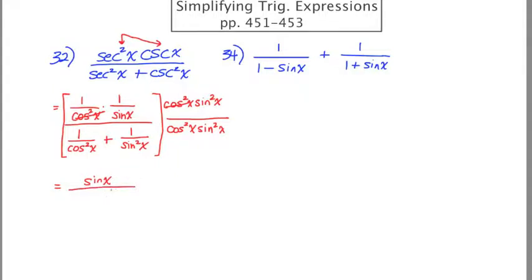On the bottom, I will distribute. Cosine squared sine squared times 1 over cosine squared leaves us with just sine squared. And then cosine squared sine squared times 1 over sine squared leaves us with just cosine squared. Hopefully you're seeing where this is going. The denominator is just going to be 1. So we have sine x over 1, which is just sine x.